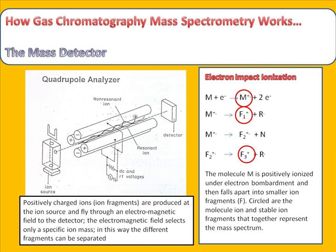When the compounds leave the chromatography column, they reach the mass detector, as previously described. This figure shows the principal operating mechanism of such a mass detector or mass spectrometer.